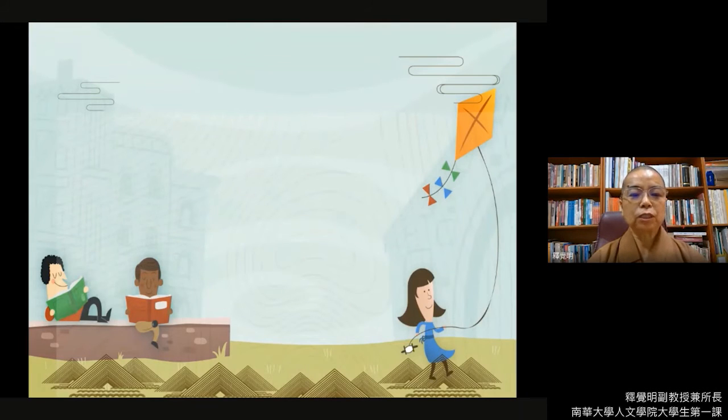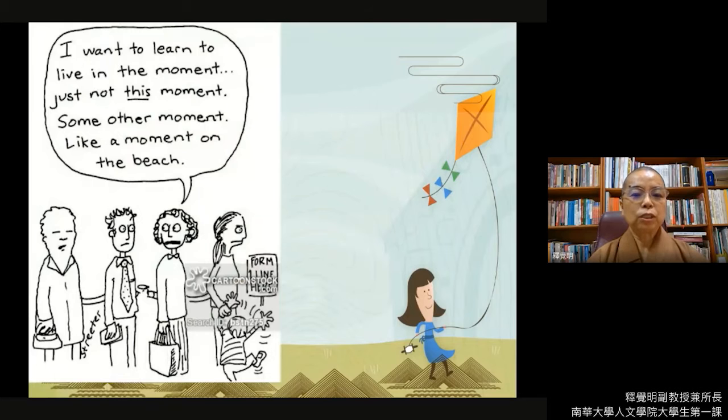那么正念就是要告诉我们，要将脑袋所谓的放空。那这一段的这个对话很有趣：I want to learn to live in the moment，我想要学习活在这个moment。Just not this moment，但是不是这一个moment，不是这一个当下。Some other moment，就是另外一个moment。Like a moment on the beach，很像要去这个海边、沙滩，有的要去逛街、要去买东西、然后要去玩、要去看电影等等。